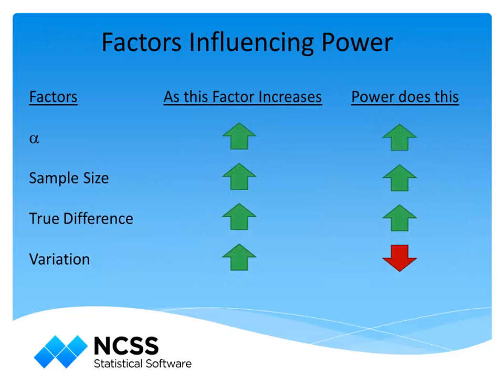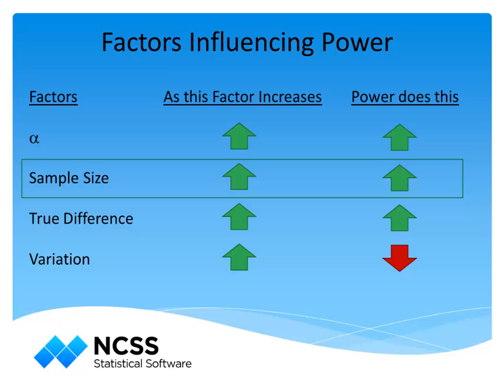The power of a test is based on the following elements: alpha, the sample size, the true difference in population parameters, and the variation. Power increases when alpha increases, the sample size increases, the true difference increases, and when the variation decreases. Researchers typically have little control over the choice of alpha, the true difference in population parameters, and the variation. This leaves the sample size as the one aspect of a study that can be controlled to achieve a desired power.